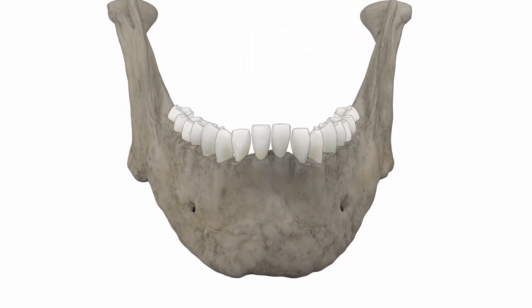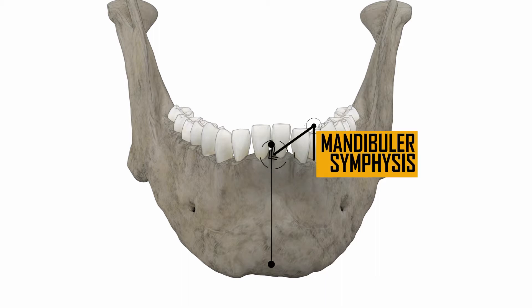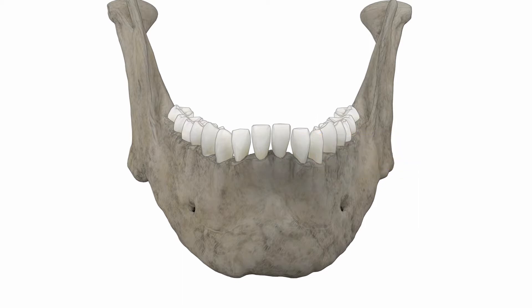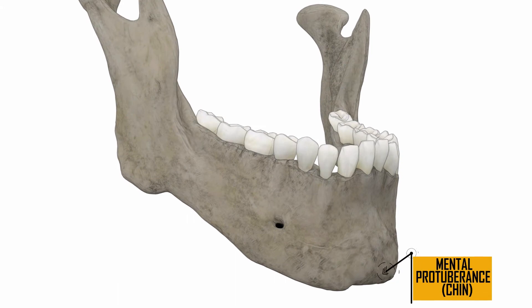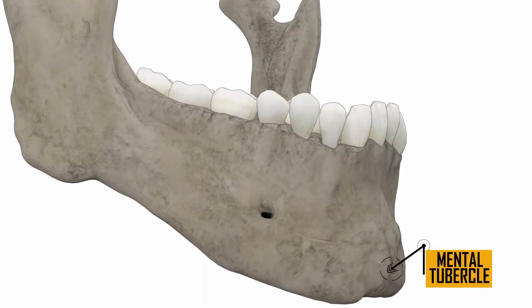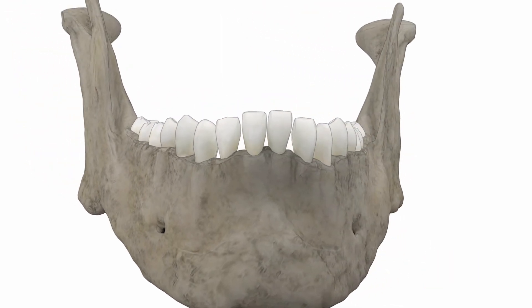The outer surface has the following characteristics. The mandibular symphysis at the midline joins the left and right halves of the bone, detected as a subtle ridge in the adult. The inferior portion of the ridge divides and encloses a midline depression called the mental protuberance, also known as the chin. The edges of the mental protuberance are elevated, forming the mental tubercle. Laterally to the ridge and below the incisive teeth is a depression known as the incisive fossa.